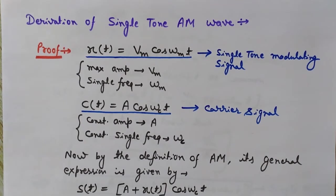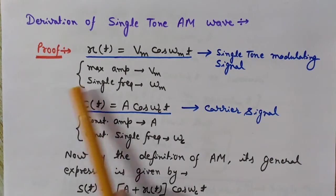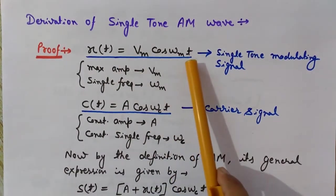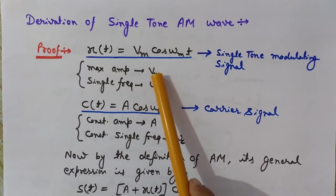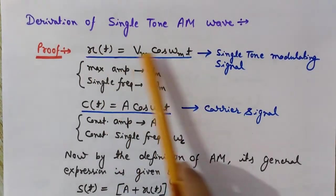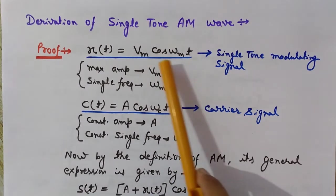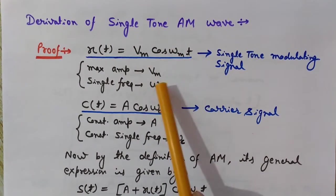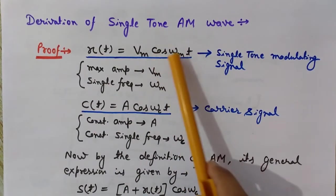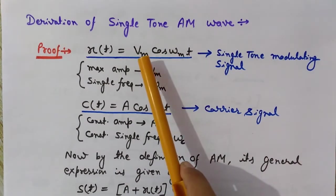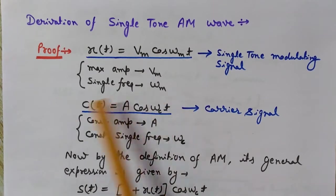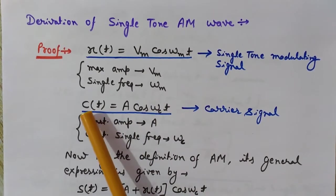Now we will see the derivation of a single-tone AM wave. The single-tone modulating signal is denoted x(t) = Vm·cos(ωm·t), where Vm is the maximum amplitude of the modulating signal and ωm is the single frequency. It is called single-tone because it has only one frequency, ωm.